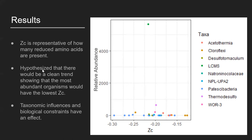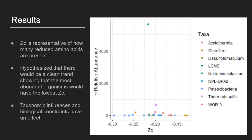It is important to note that Zc is representative of how many reduced amino acids are present in a given taxa. The taxa can be seen here on the right with Zc on the x-axis and relative abundance on the y-axis.